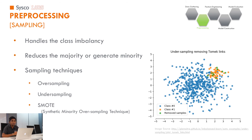Another thing we do in data preprocessing is sampling. In a classification problem, some classes may have a large number of data points while others have very few — this is called class imbalancing. If we train a model with a class-imbalanced dataset, the model will perform well on the majority class but poorly on the minority class. To address this we use sampling techniques: oversampling increases the data points in the minority class; undersampling reduces the number of data points in the majority class; and the SMOTE-based approach synthetically generates samples to balance the dataset.